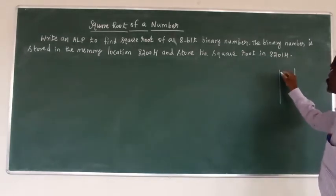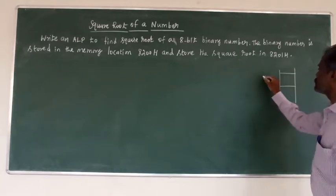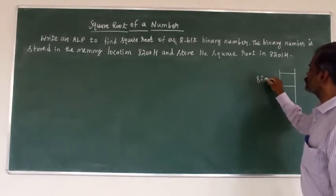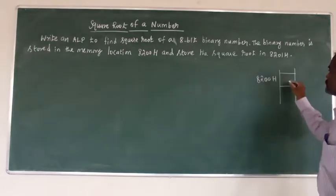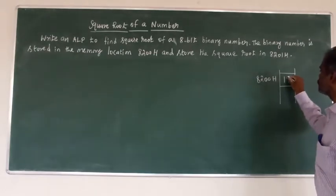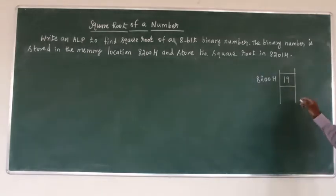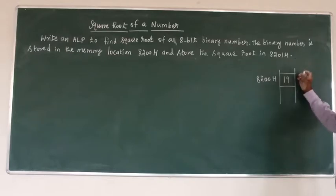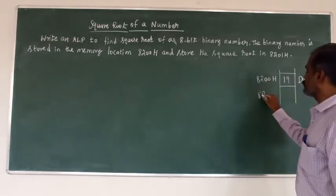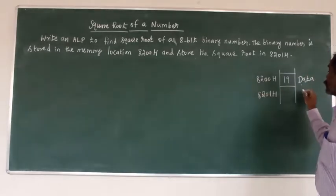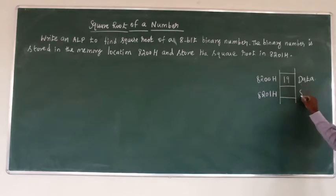The memory layout: 8200H stores the input data — here it is 19H — and 8201H is where we store the square root result.